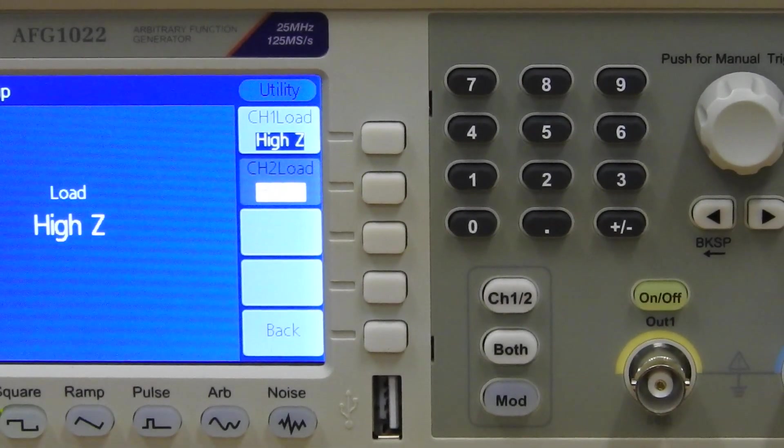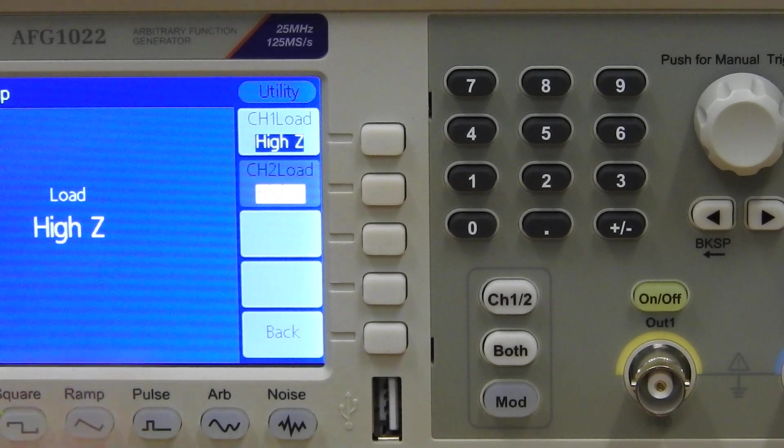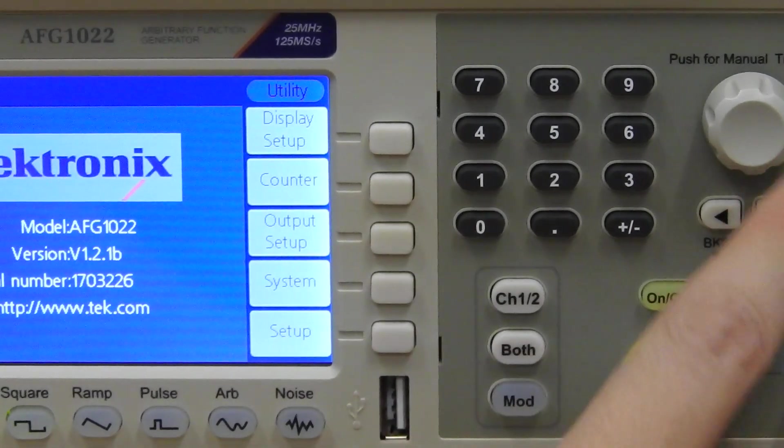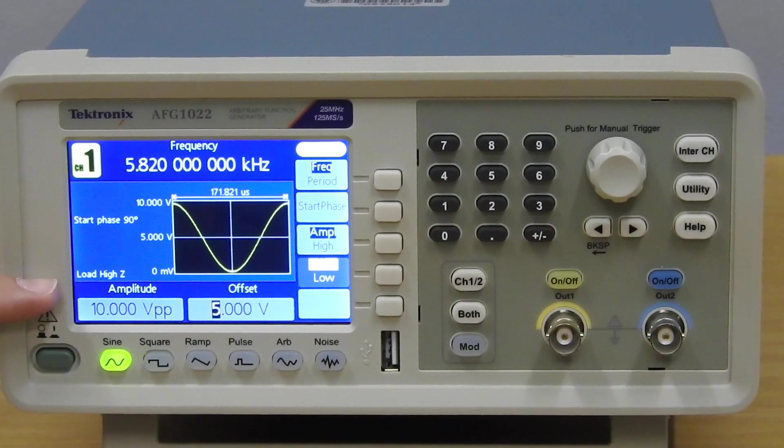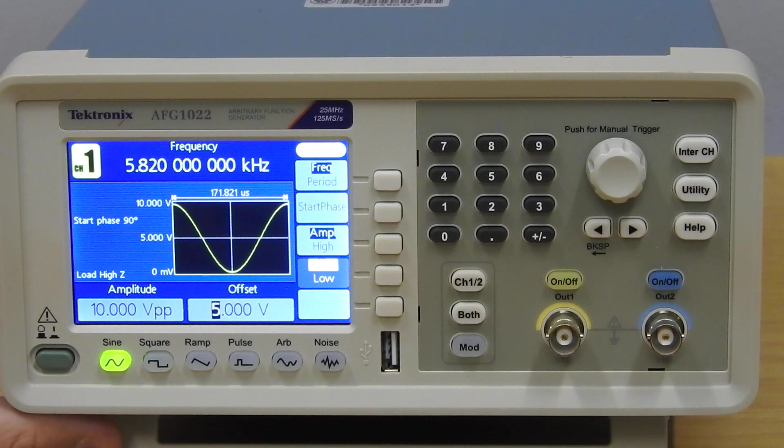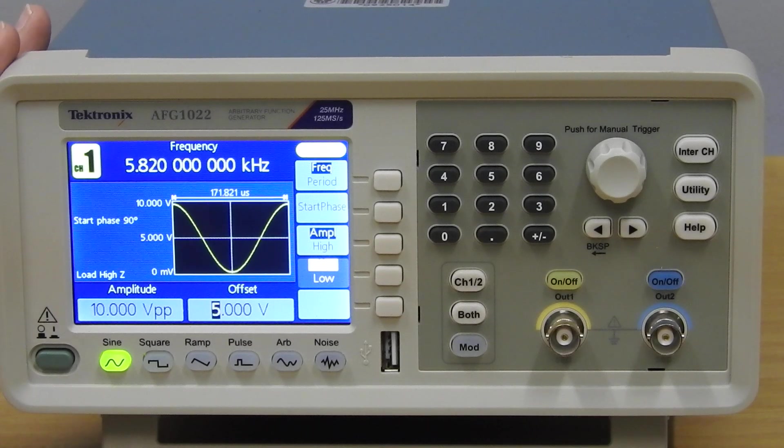Just tune it to high Z, go out of your utilities. Now it will say load high Z and your generator will be ready to supply any circuit.